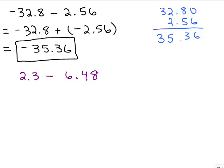Again, we have a number 2.3 is smaller than 6.48. So we want to rewrite this as adding the opposite, 2.3 plus negative 6.48.